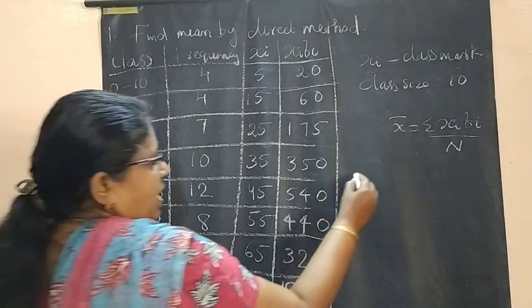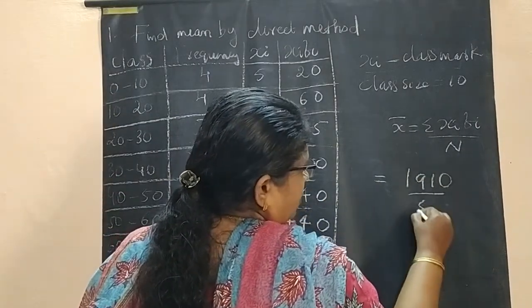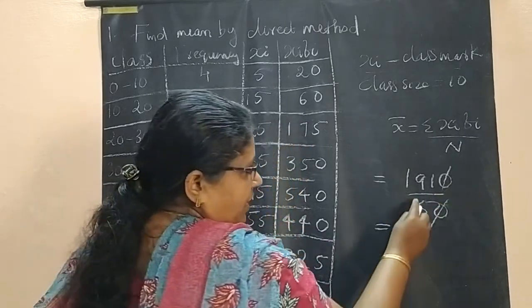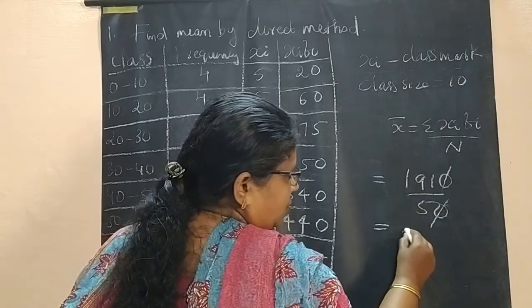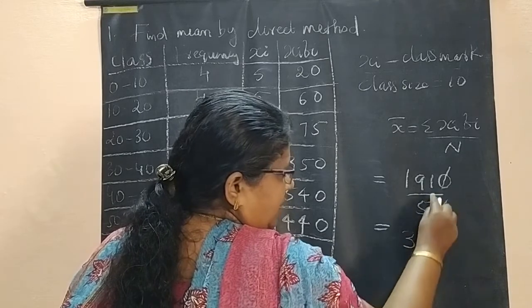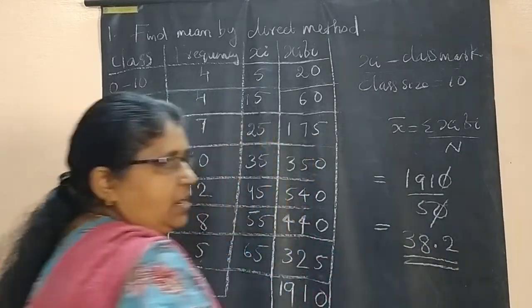What is our x̄? x̄ = 1910 / 50. These 2 cancel. Then, 191 / 5: 19 by 5 is 3, 4 balance. 41 is 8, 1 balance. So 38.2. This is our mean.